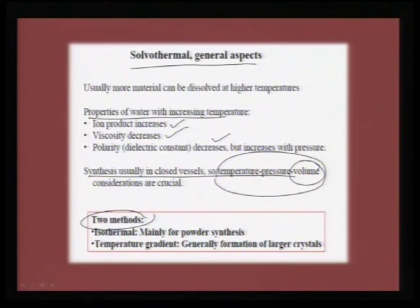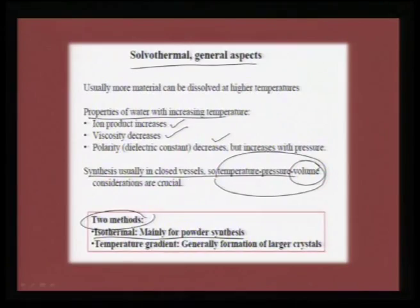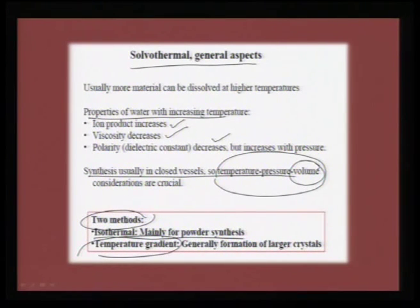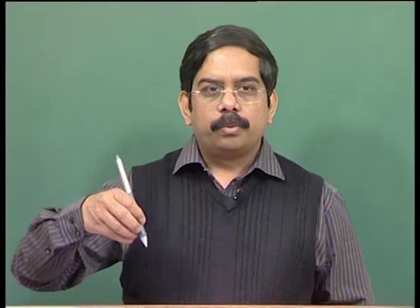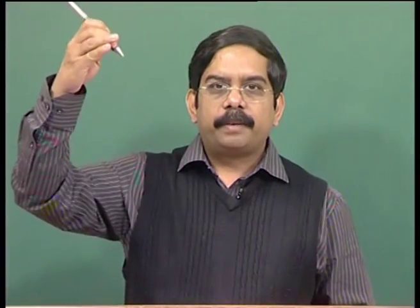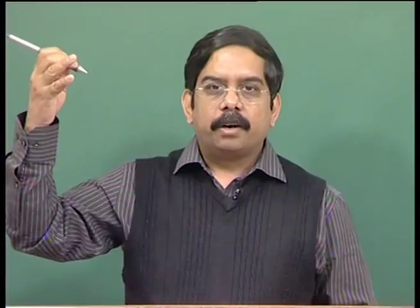There are two methods: one is isothermal, mainly for powder synthesis, where you take the reaction temperature to 70 or 100 degrees and put it in a furnace for 3, 6, or 7 days. Recrystallization-oriented powder synthesis usually involves a long period of time in isothermal experiments. Then you also have temperature gradient experiments — if you want to grow a crystal, you seed a crystal and provide a temperature gradient, so over a period of time crystals start growing on the seed crystals, giving huge crystals.